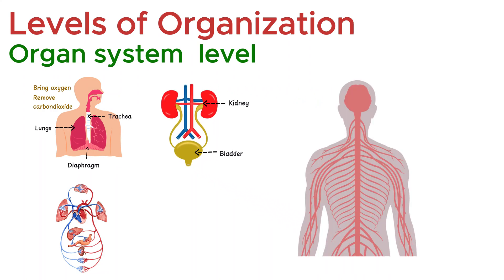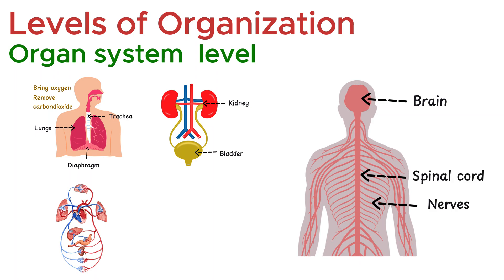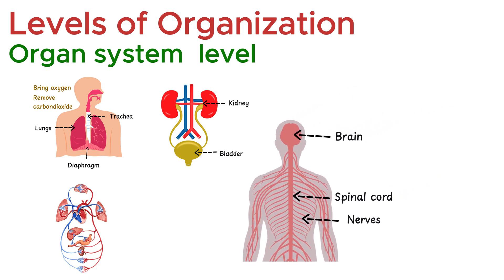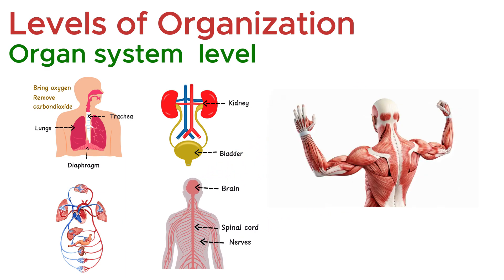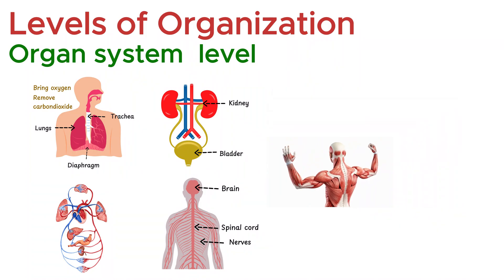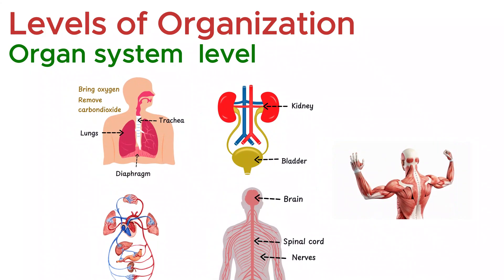The nervous system, with the brain, spinal cord, and nerves, acts as the control center, sending electrical signals to coordinate every action. Meanwhile, the musculoskeletal system allows movement, support, and protection. Each organ system is amazing on its own, but none can keep the body alive by itself. The real miracle is how these systems are interconnected, working together like instruments in an orchestra.